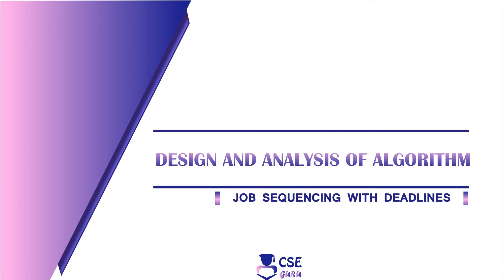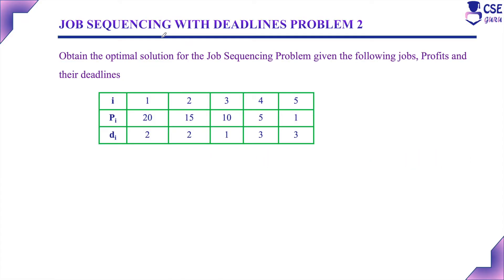Welcome to CSE Guru. Now we will discuss an example to implement the job sequencing problem with deadlines. The job sequencing problem is: from the given n jobs, we need to consider the jobs that should be completed within their deadline and that should have maximum profit.